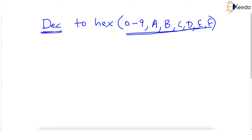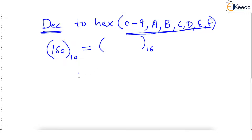In decimal, you can form a number using only 10 digits, that is 0 to 9. Let's take an example: we have the number 160, which is a decimal number — base 10 — and we want to convert it into base 16 hexadecimal. The procedure is that 160 is divided by 16. We divide by 16, not 2 or 3 or any other number, because we want to convert from base 10 to base 16.